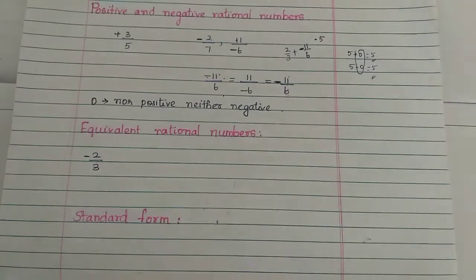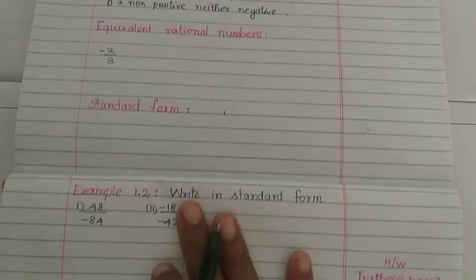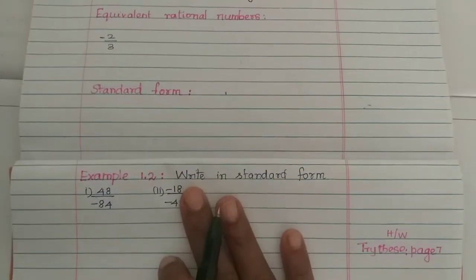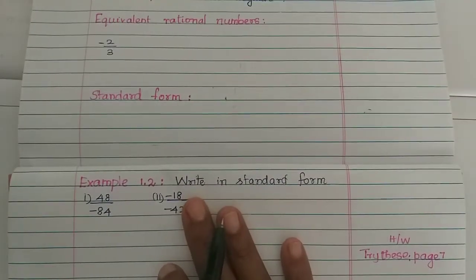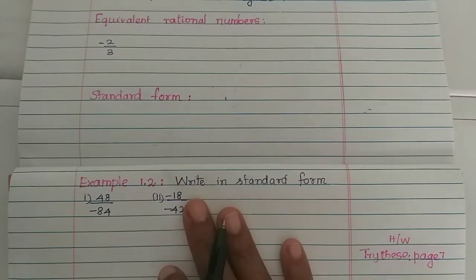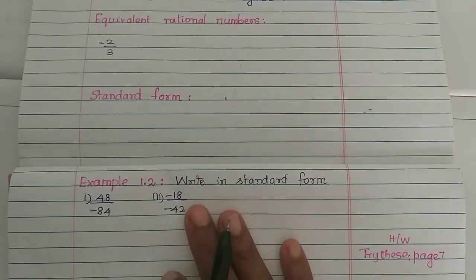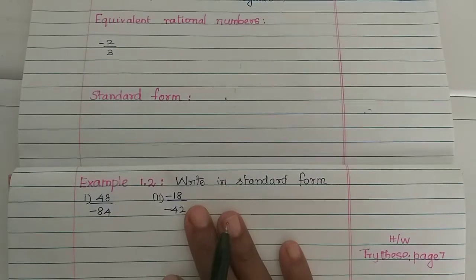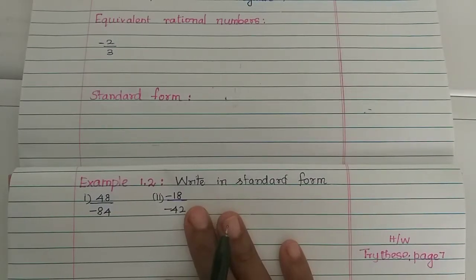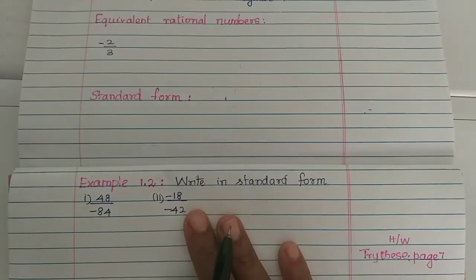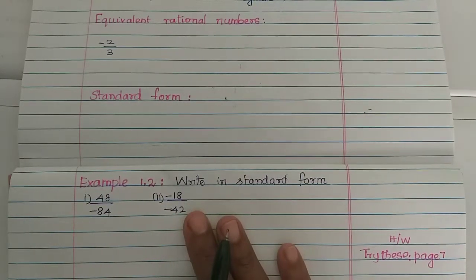That's why 0 is neither positive nor negative — the most important symbol is 0. So next, we look at equivalent rational numbers, which are like equivalent fractions that you may have studied in previous classes.